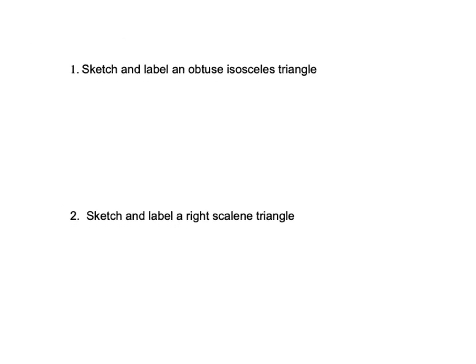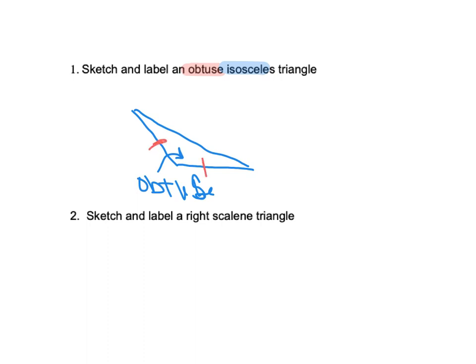Let's practice what that might actually look like. If I wanted to sketch and label an obtuse isosceles triangle — first, obtuse means it's going to have exactly one angle greater than 90 degrees. And isosceles means two sides are going to be the same. So let's draw an obtuse angle and connect it. This angle right here is obtuse, and if it's isosceles, this side and this side are congruent to each other, making it isosceles because there are two sides that are the same.